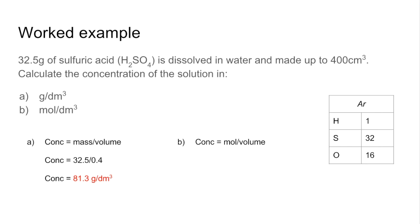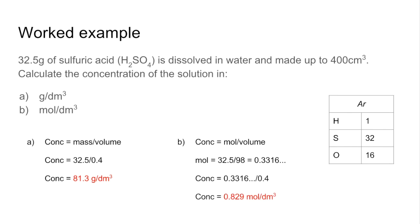For part (b), concentration = moles ÷ volume, but we don't have moles directly — we need to calculate them first using moles = mass ÷ Mr. The Mr of sulfuric acid (H₂SO₄) is 98 (2 hydrogens, 1 sulfur, 4 oxygens). So moles = 32.5 ÷ 98 = 0.3316... Dividing by 0.4 dm³ gives a concentration of 0.829 mol/dm³.